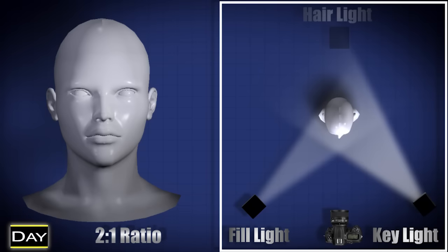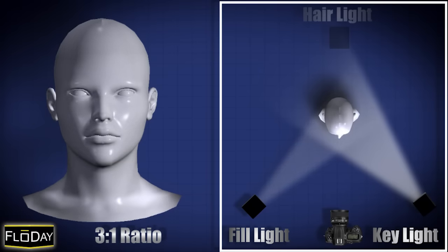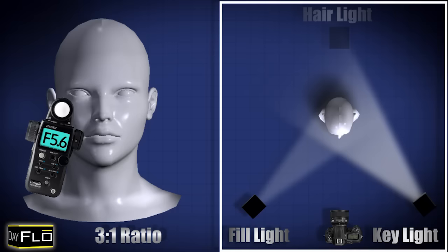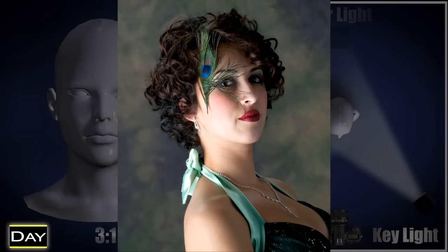3 to 1 ratio lighting. Your fill light will be 2 stops dimmer than your key light. Your key light at f11 and your fill light at f5.6. This lighting is beautiful for portraits and is commonly used for all portrait scenarios.